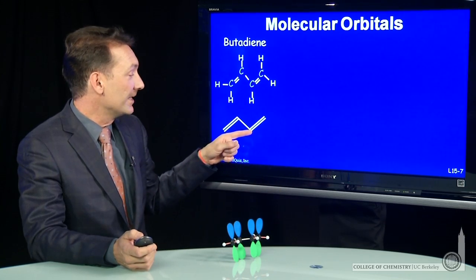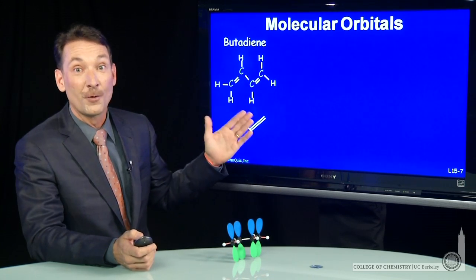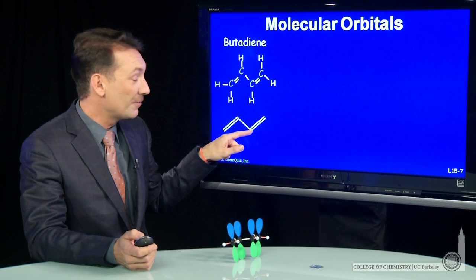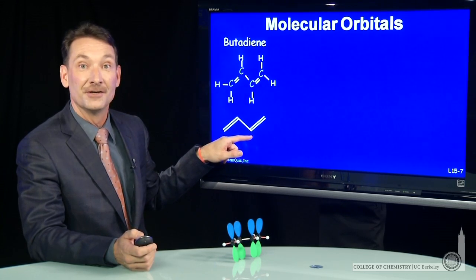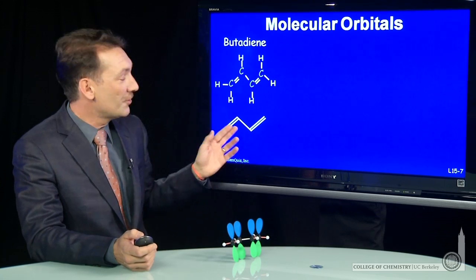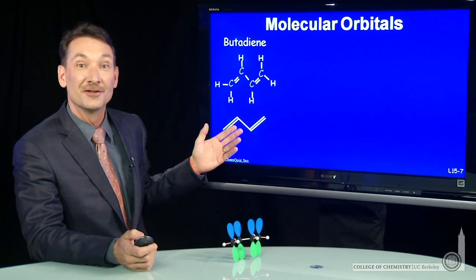You know that each carbon has to have four total bonds. So this carbon here at this vertex has one, two, three, so there must be a hydrogen here, four. So shorthand notation for writing butadiene looks like this.